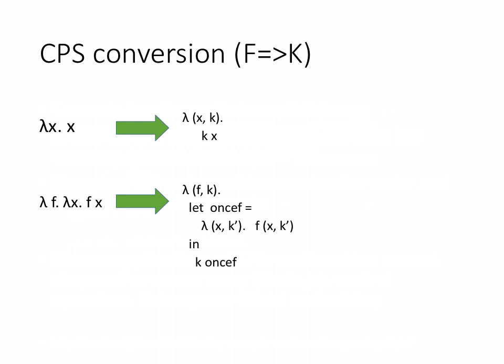Here are some examples of CPS translation. Here's our identity function — I left off the types so you can understand the translation first. When we translate it, it becomes a function that takes a second argument K, the continuation. Every translated function gets another argument, a continuation. When it has its result, it calls that continuation with the result. The identity function just returns its argument immediately, so instead of returning X we return K(X) — the continuation takes that result.